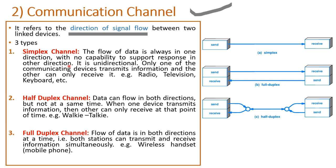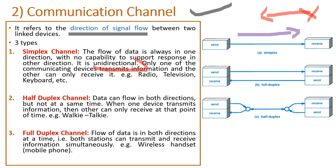This communication can happen in three different ways. The very first is the simplex channel. Here the sender is sending the signals and the receiver is receiving the signals — it is in only one direction, it cannot happen in the other direction. An example is radio: you are listening to news on the radio, but whatever you are talking, those signals are not received by the radio. That is the simplex signal — it is always unidirectional.